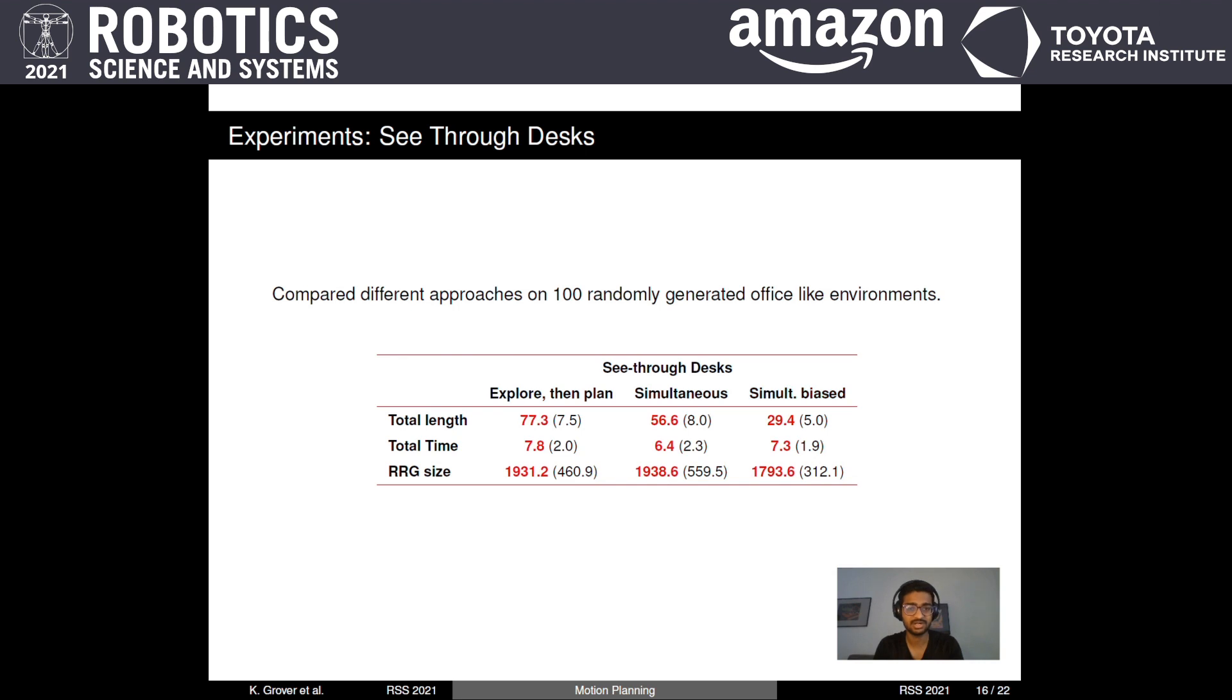We generated 100 random 6-room office-like environments by randomizing the positions of bins and tables and ran all three approaches on them. The entries in the table are the mean and the standard deviation. In this table, we have results for see-through desks. That is, the robot can see beyond desks and add edges behind it. This could be the case if the robot was a flying one and is able to see beyond certain obstacles.